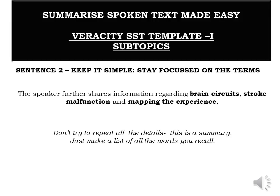Here's what I came up with: 'The speaker further shares information regarding brain circuits' — I noted 'circuits' because she mentioned it multiple times — 'stroke, malfunction, brain disorder, and mapping the experience.' I use 'mapping' because she discussed it toward the end as a scientist experiencing her own stroke. Words like stroke, malfunction, circuits, experience, and mapping — I've tried to put them together into one sentence, listing them with commas rather than forming a complicated sentence.